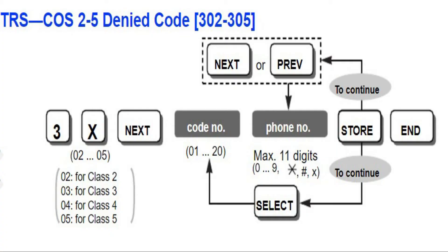We can program class of service denied codes using program numbers 302, 303, 304, and 305. Program 302 is used for COS2, 303 for COS3, 304 for COS4, and 305 for COS5 respectively.